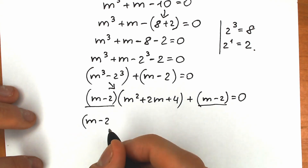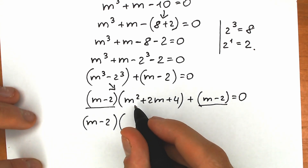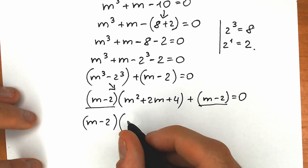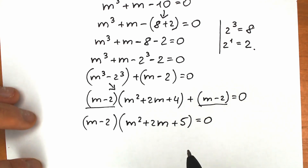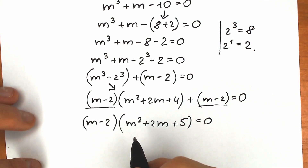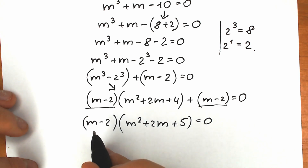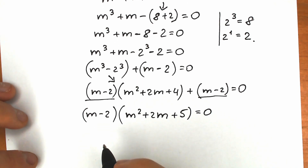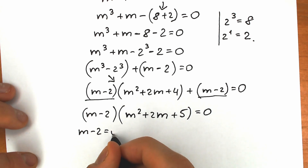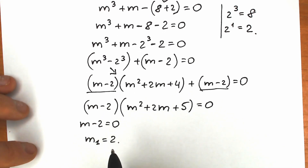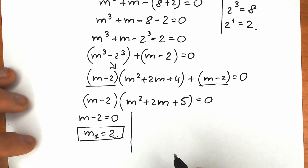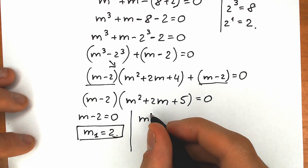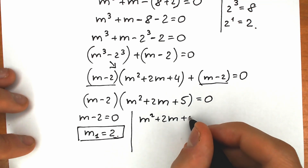Now the final moment: we have (m minus 2) appearing twice, so we can factor it out. We get (m minus 2) times (m squared plus 2m plus 4 plus 1), which gives (m minus 2)(m squared plus 2m plus 5) equal to zero. Setting the first factor to zero gives m₁ equal to 2. Now let's solve the second equation: m squared plus 2m plus 5 equals zero.